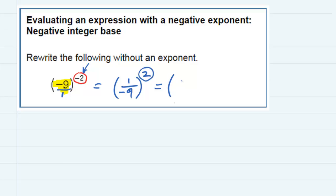So this would be 1 over negative 9 times 1 over negative 9, multiplying it with itself. I've written the base 2 times because my exponent was 2, and now since I've got fractions being multiplied, I can multiply across the top, 1 times 1 is 1, and I can multiply across the bottom, negative 9 times negative 9.